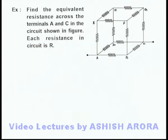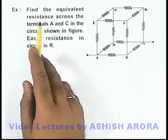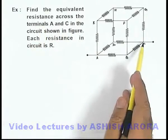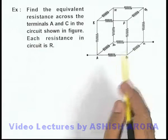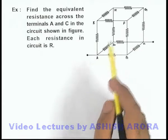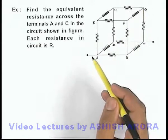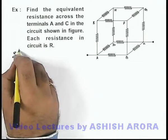This example is similar to the previous one, except here we are required to find the equivalent resistance across terminals A and C, which is the face diagonal of the cube, whereas in the previous example we obtained the resistance across A to G, which was the largest diagonal of the cube. Here also we are given that each resistance in the circuit is R.